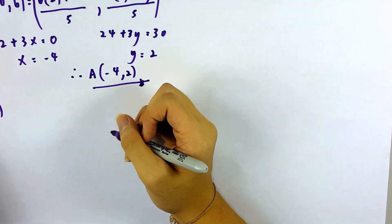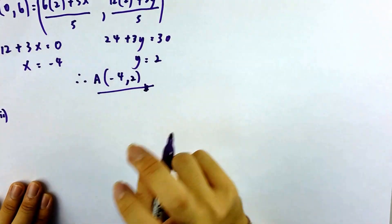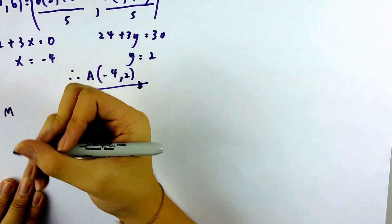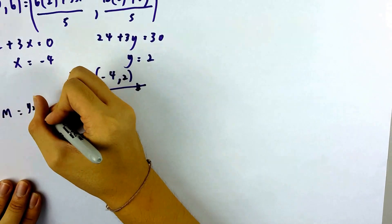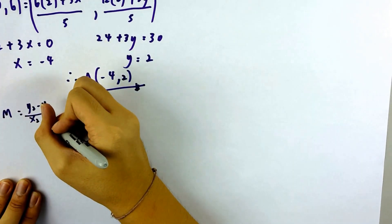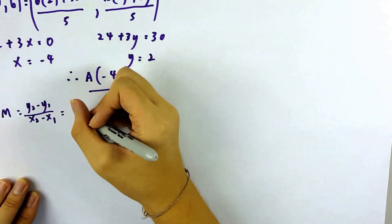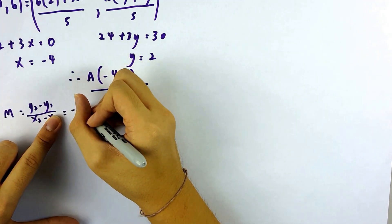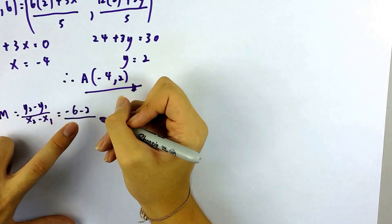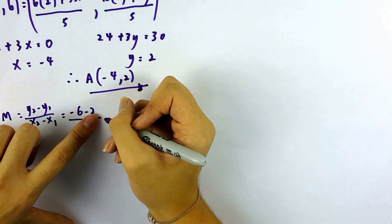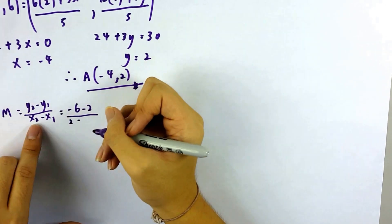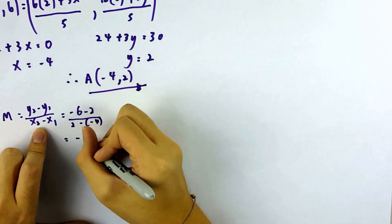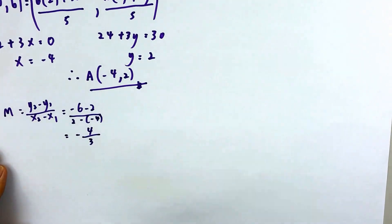Now we go to part (ii): the equation of straight line AD. To find the equation, you first need the gradient. M equals (Y₂ minus Y₁) over (X₂ minus X₁). The y-coordinate of D is negative 6, minus 2 which is the y-coordinate of A, over the x-coordinate of D minus negative 4, the x-coordinate of A.